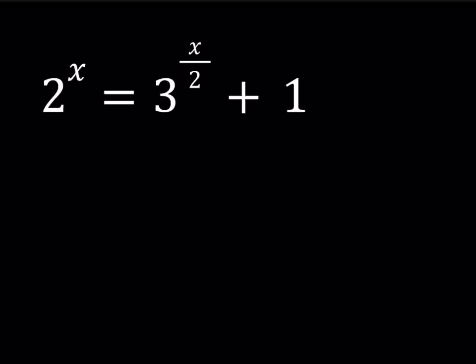So this is what we're going to do. We're going to divide both sides by 2 to the power x. Why? You'll see in a little bit. But before we do that, let me write 3 to the power x over 2 as square root of 3 to the power x. Why? Because you can write square root of 3 as 3 to the power 1 half, or you can write 3 to the power x over 2 as 3 to the power 1 half to the power x, and this is what you get from there.